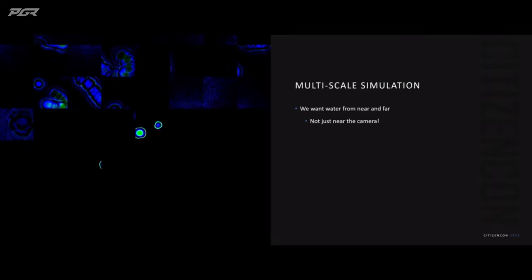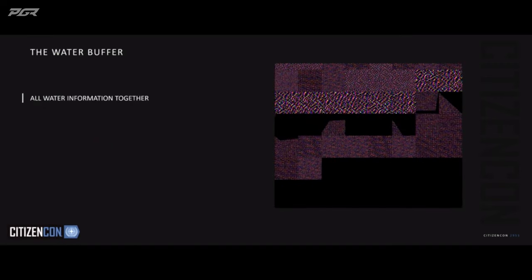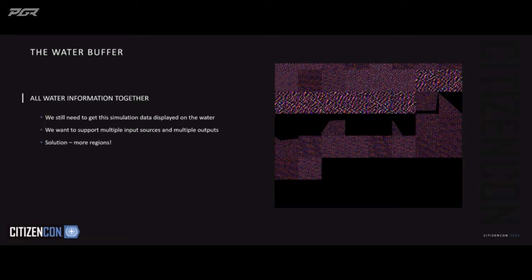One more thing we had to address: it's all well and good having this work on a puddle, but Star Citizen is made of oceanic planets — we needed to make this multiscale. We wanted the water simulation near and far, not just in a square around the camera. We wanted lots happening at once. The solution we picked was a multi-region water simulation. This was really tricky to get right, but I think we have now. We dynamically allocate simulation regions depending on what is colliding where and what resolution we need at what parts of the screen. The simulation regions need to happen wherever something is contacting the water regardless of whether you can see it, because there's a collision going on there — if it stops and has to restart when you look back, that looks bad — whereas for the water rendering, we only need to know the total result when it's actually in view.